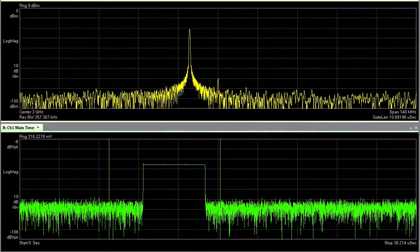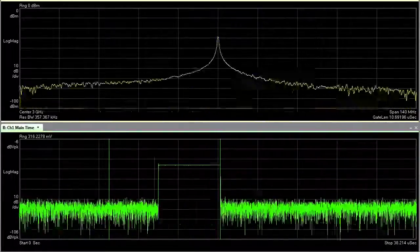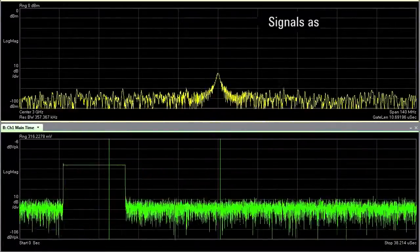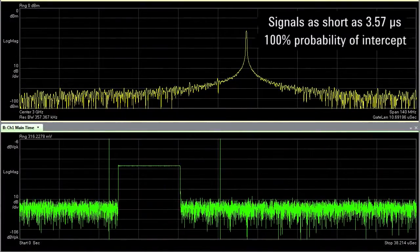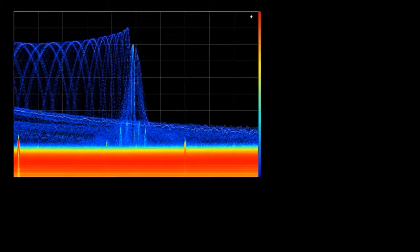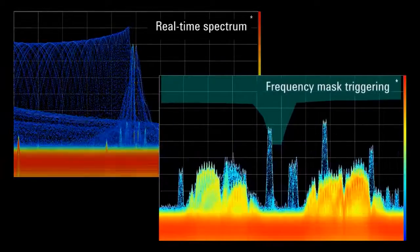A fundamental task for a real-time analyzer is to make sure you don't miss any signal. In the PXA, signals as short as 3.6 microseconds can be detected with 100% probability of intercept. All this performance is available for both real-time spectrum measurements and frequency mask triggering.